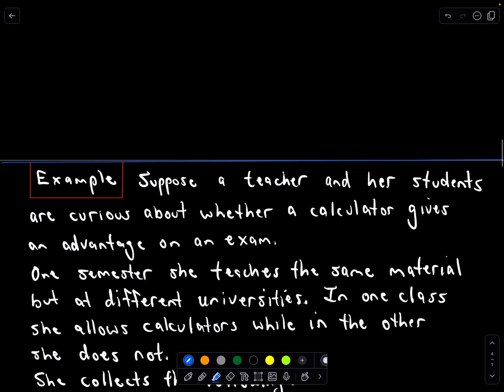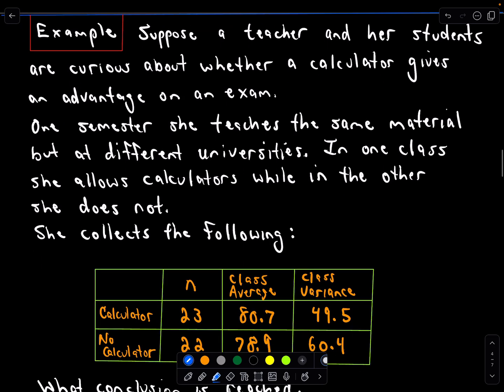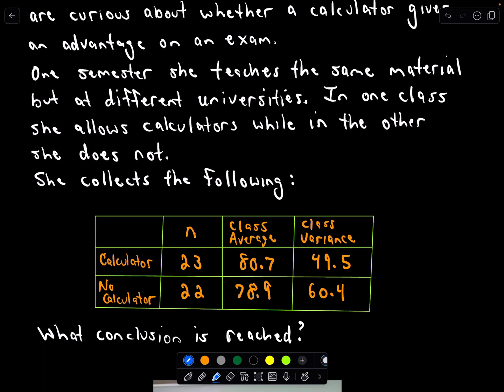So here we go. Let's do the actual example. Suppose a teacher and her students are curious about whether a calculator gives an advantage on an exam. And I picked this one out because I'm genuinely interested. I've had this conversation with my own students. So they decide to test it. One semester she teaches the same material but at different universities.